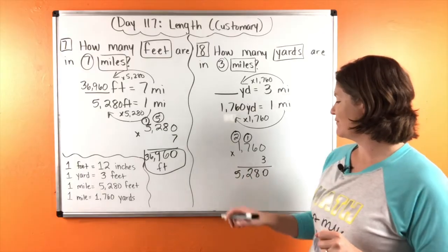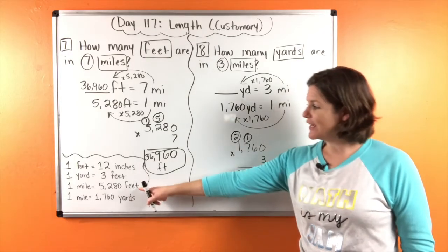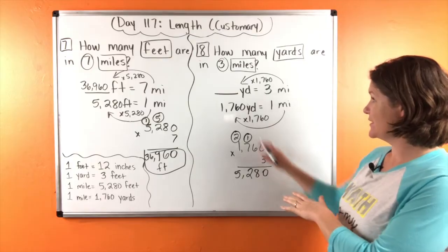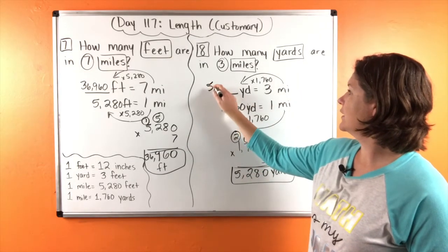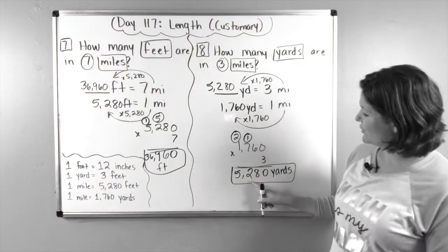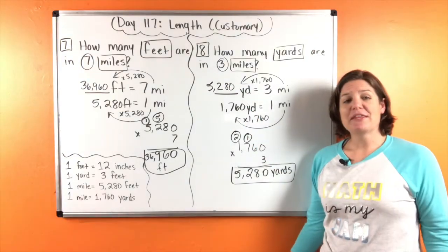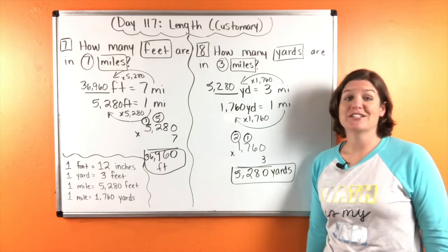Oh, look at that. So we have 5,280 feet, which is right there. But this is not feet. This is yards. There we go. Okay. That's interesting. I wrote my twos differently. Sometimes I do that. But you know what? That is it for day 117.